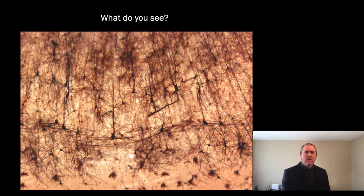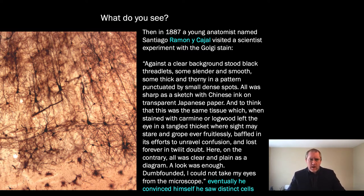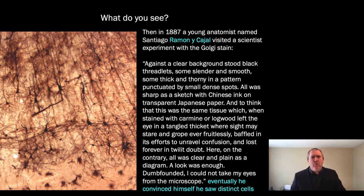So again, what do you see here? Do you see a lot of individual neurons or do you see one interconnected net? Golgi was one of the most famous scientists in the world at the time — highly respected. He was nominated for the first Nobel Prize and would go on to win a Nobel Prize eventually with Ramon y Cajal, a point I will come back to.